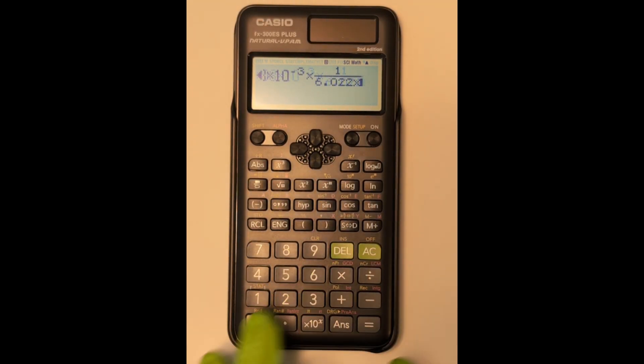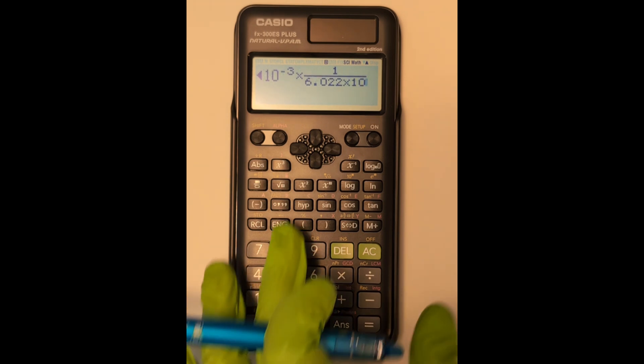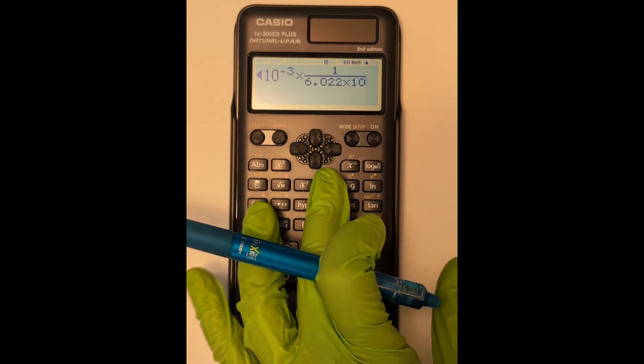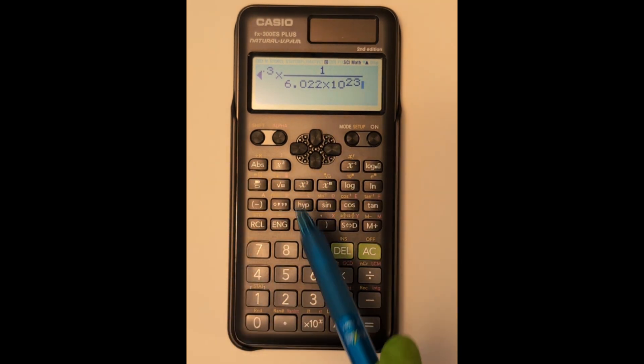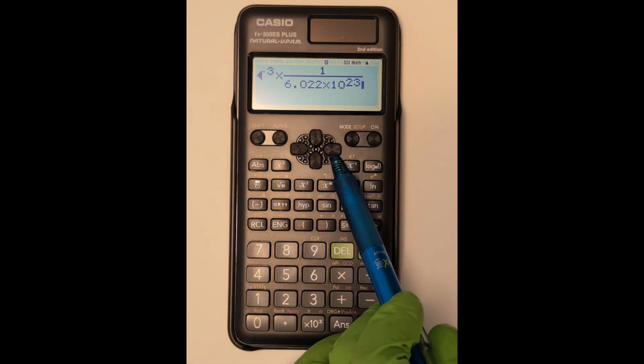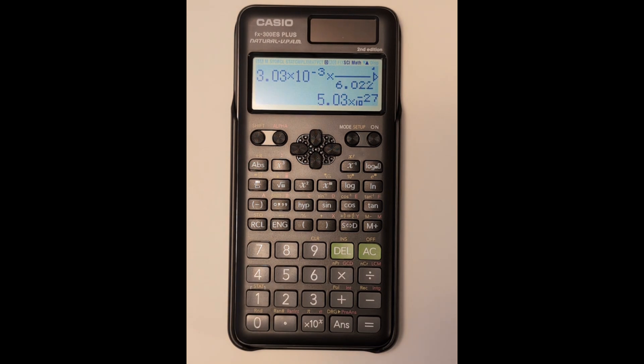Remember when you use that exponent button higher up on the calculator, you want to make sure that you're using the arrow keys to hit over. So here I hit 10 and I hit that exponent button, 23. I need to hit the over key before I enter in anything else or before I hit equal,